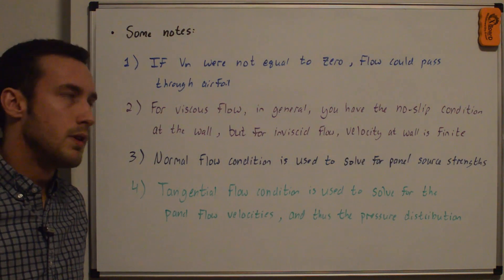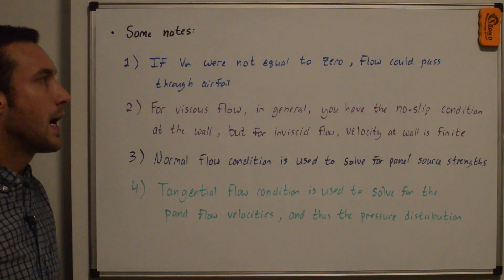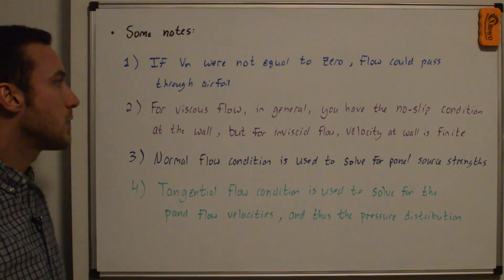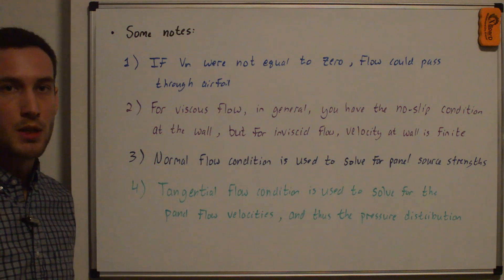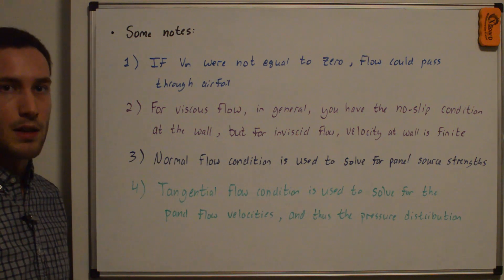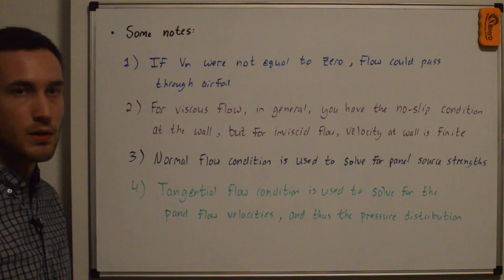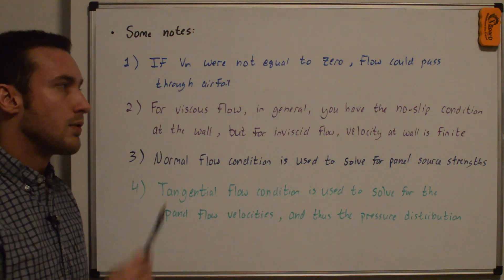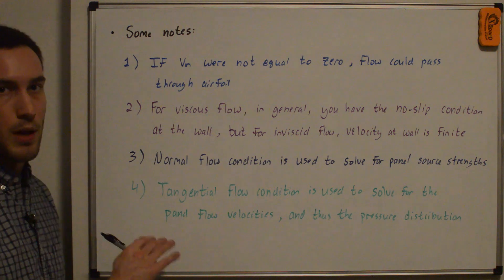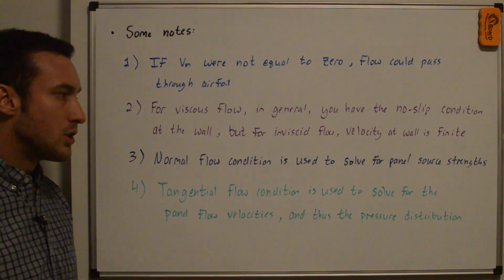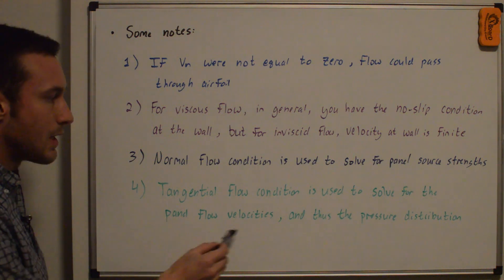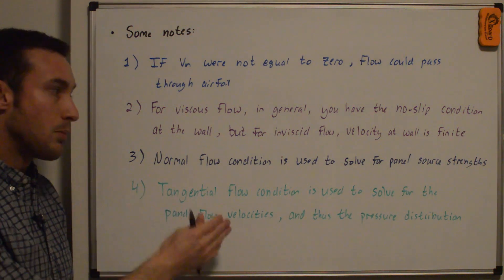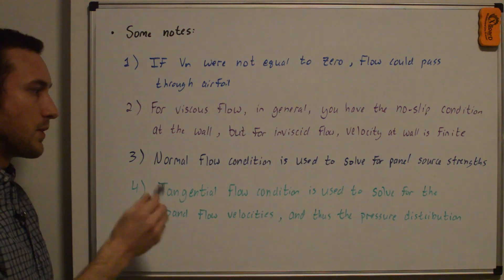A few notes: if the normal velocity were not equal to zero, flow could pass through the airfoil. For viscous flow you have the no-slip condition at the wall, but for inviscid flow the velocity at the wall is finite — and we have inviscid flow. The normal flow condition is used to solve for the panel source strengths; we don't need the tangential condition for that. However, the tangential flow condition is used to solve for the panel flow velocities, since the normal velocity is zero, making the tangential velocity the velocity at the panel — allowing us to solve for the pressure distribution.